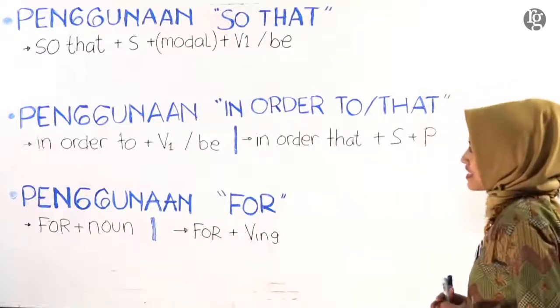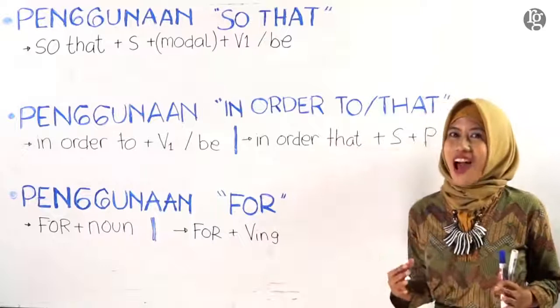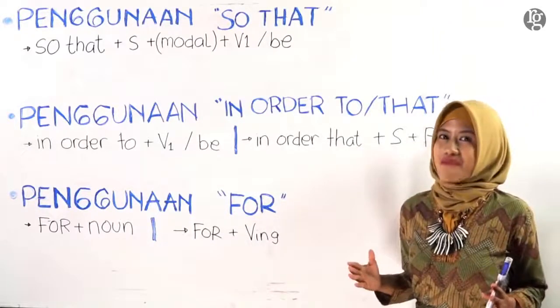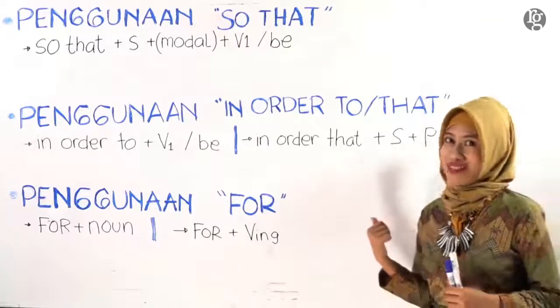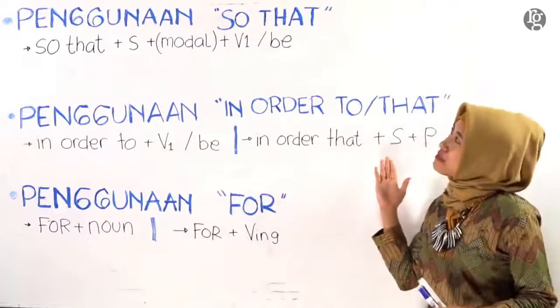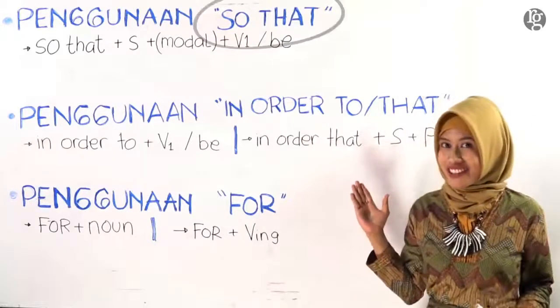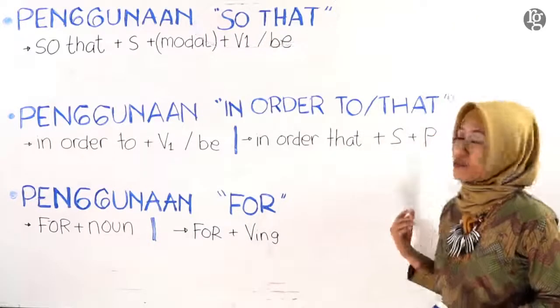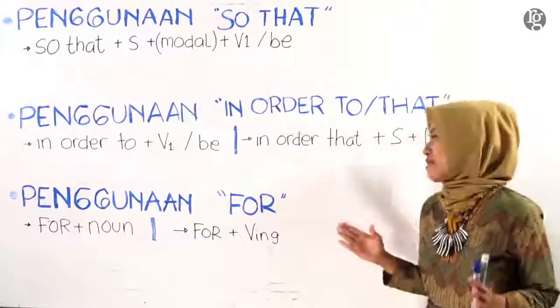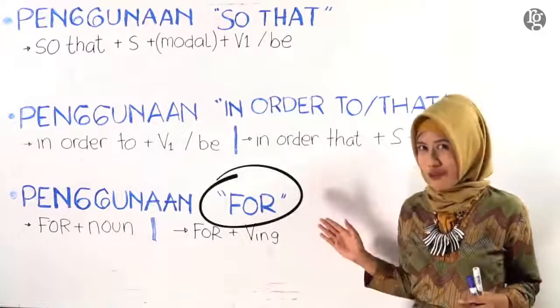Kalian bisa perhatikan beberapa konjungsi yang sudah kakak tulis di sini. Generally, kita menggunakan beberapa konjungsi yang terdapat di sini untuk menyampaikan maksud atau tujuan. Yang pertama adalah, kalian bisa menggunakan konjungsi 'so that'. Yang kedua, kalian bisa menggunakan konjungsi 'in order to' atau 'in order that'. Yang terakhir, kalian bisa menggunakan konjungsi 'for'.